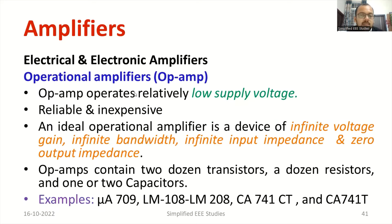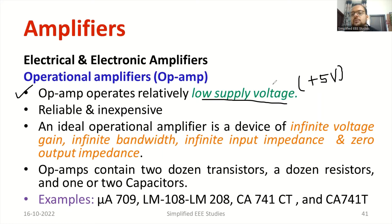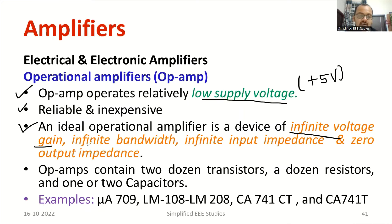Moving ahead, let us continue with the salient features. The operational amplifier operates on a low voltage supply, maximum 5 volts. It is quite reliable and inexpensive. We will be discussing the ideal characteristics. A good op-amp must have infinite voltage gain, infinite bandwidth, infinite input impedance, and zero output impedance. These are the ideal characteristics of op-amp.